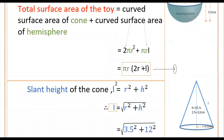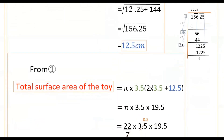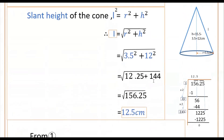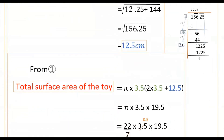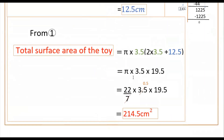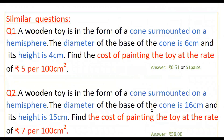Now from the formula, the total surface area of the toy = πr(2r + l) = π × 3.5 × (2 × 3.5 + 12.5) = π × 3.5 × (7 + 12.5) = π × 3.5 × 19.5. Using π = 22/7, this gives 22/7 × 3.5 × 19.5 = 22 × 0.5 × 19.5 = 214.5 cm². This is the total surface area of the toy. Please practice this and similar questions.